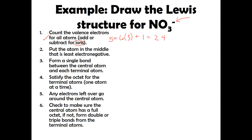Step two: put the atom that is least electronegative in the middle. Notice we've got nitrogen and three oxygens. The atom listed first is more often in the central position, especially when you have multiples of another atom. Also, nitrogen is further left than oxygen on the periodic table, so nitrogen is less electronegative. We're putting nitrogen in the middle and positioning our oxygens around it.